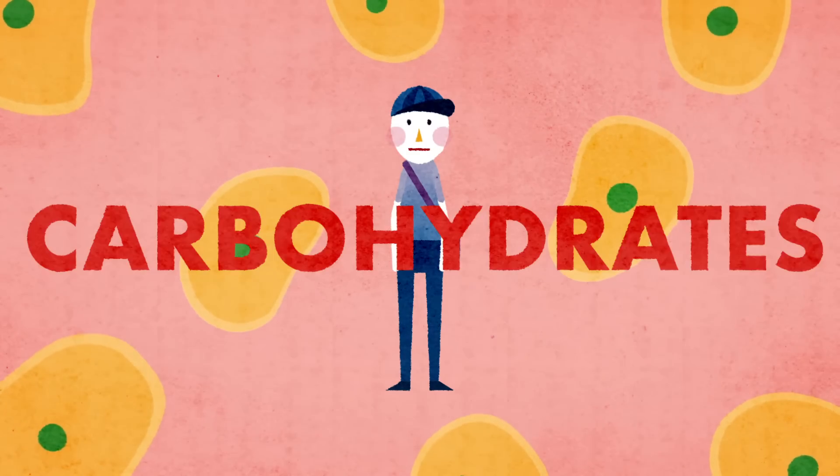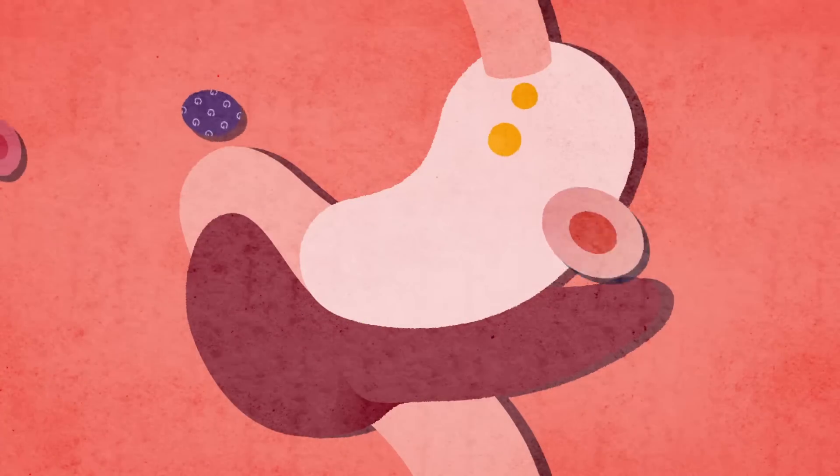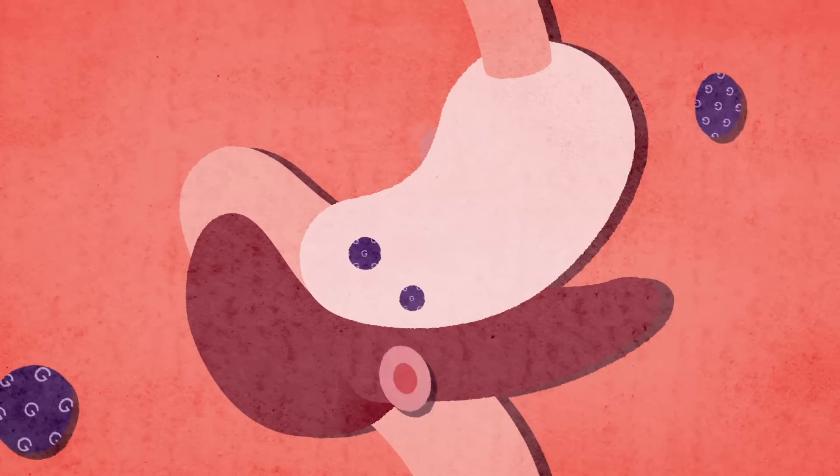When we eat food containing carbohydrates like bread and pasta, our stomach converts the carbohydrate into glucose and lets it out into our bloodstream.